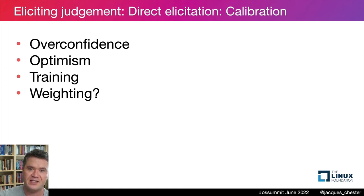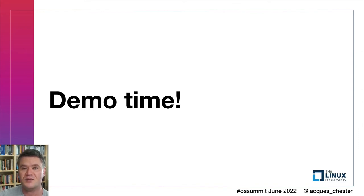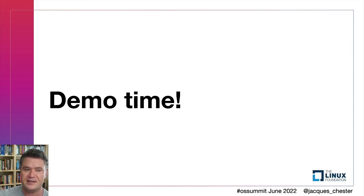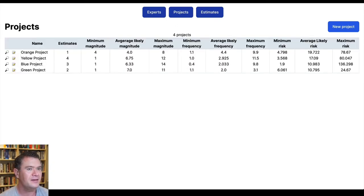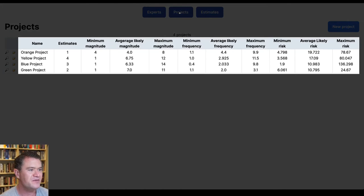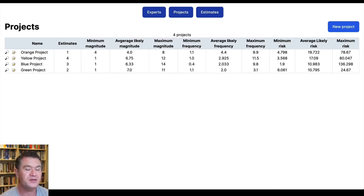Now it's time for a demo. Since this talk is pre-recorded, nothing can go wrong. What you're about to see is a prototype of what I'm calling SEER — Security Expert Elicitation of Risk. SEER is not a production app; the goal is merely to demonstrate what kind of information is gathered and how. First, let's look at who we'll be eliciting judgments from: we have four experts, some with requisitely silly names. We also have a list of projects over which we can gather estimates.